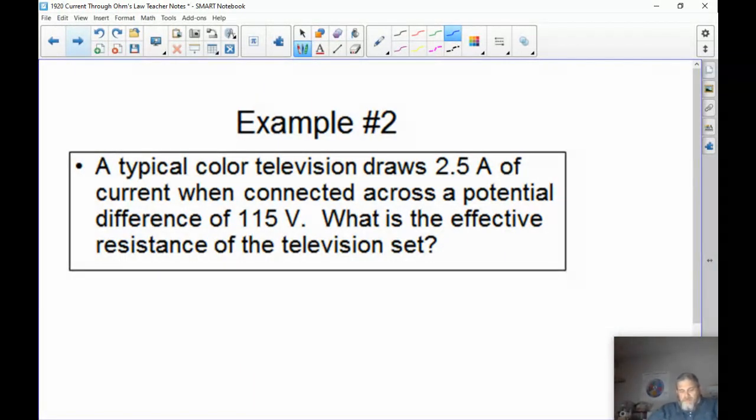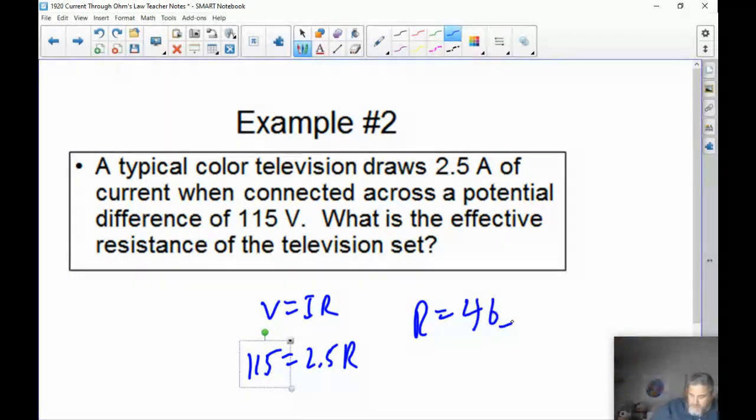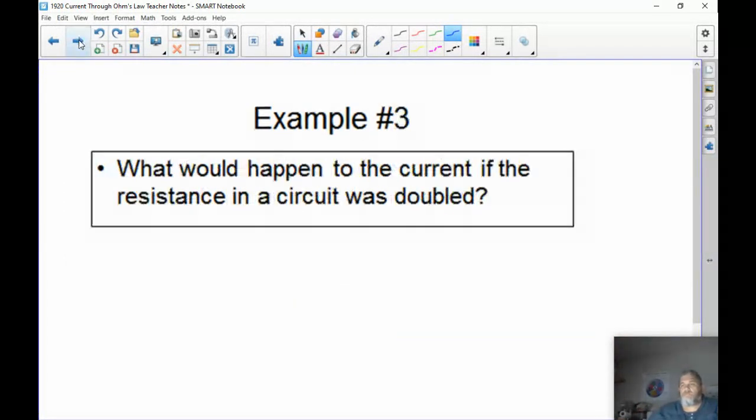For example two, a typical color television (this is an older TV) draws 2.5 amps of current when connected across a potential difference or voltage of 115 volts. What's the effective resistance of the circuit? We start with V equals IR. V is 115. I is 2.5 times R. And we can solve easily for R. 115 divided by 2.5 gets me 46 ohms.